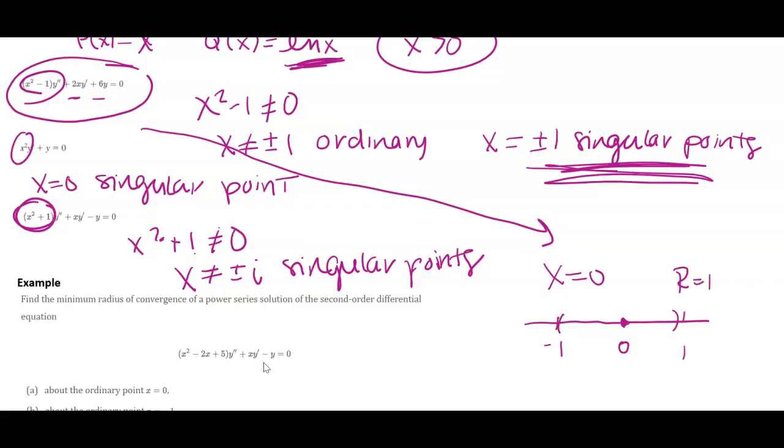Like the minimum radius of convergence I could really have is one in that case. If I wanted to maybe look at 3, like X equals 3, then I could have a radius of convergence of 2 because that's the distance down to that singular point.